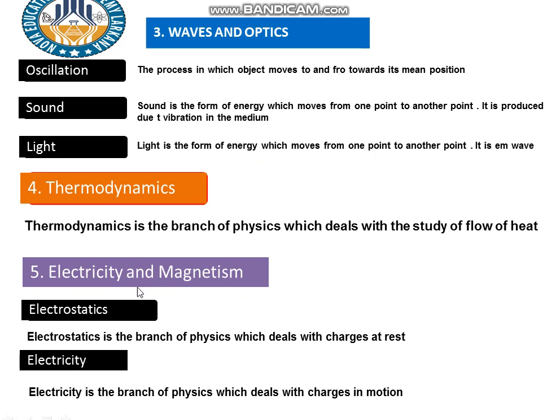The next branch is electricity and magnetism, which includes electrostatics and electricity. Charge is a fundamental property, an intrinsic property of material. Electrostatics is a branch of physics which deals with charges at rest. When charges have zero flow, the system is static, called electrostatics. Electricity, also called electrodynamics, is a branch of physics which deals with charges in motion.